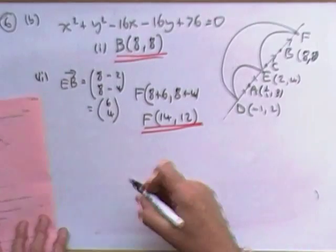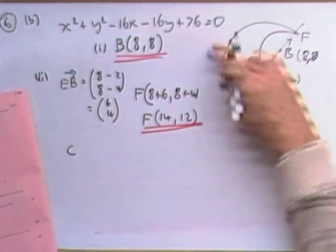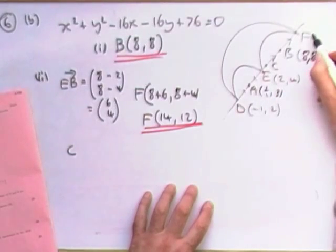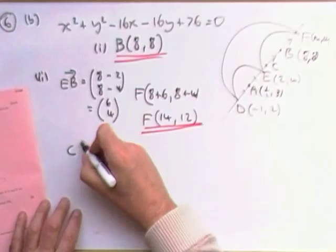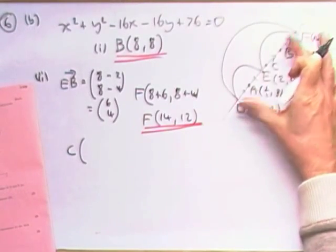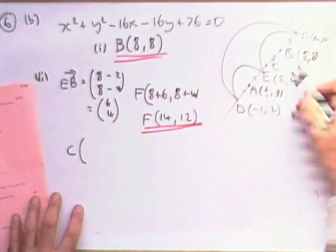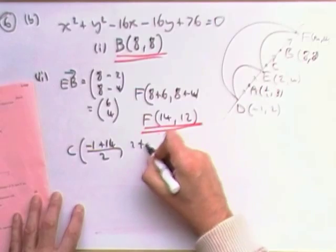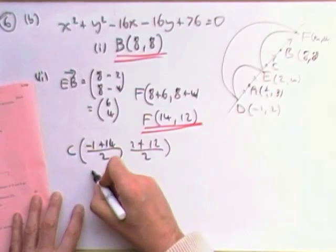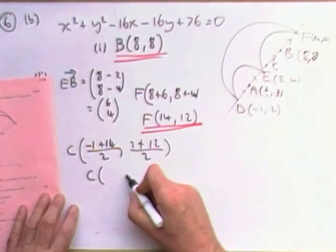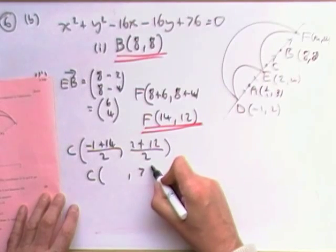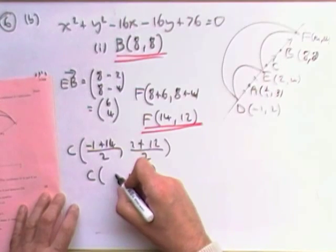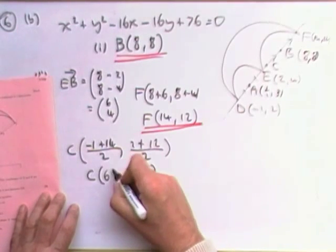What else did it want? It wanted the coordinates of C. Now C was the center of the big circle. Well, now I know the points it goes through. It goes through D and F. F was 14, 12. So C is going to be the midpoint of DF. So it's average of the coordinates. So negative one plus 14, that's a bit awkward. And two plus 12, that's a bit nicer. So C is going to be the point then. We'll do the easier one first. That's 14. So that's going to be seven. That's 13 upon two. Will I write 13 upon two? Will I write six and a half? I'm not sure which I'll put down. I'll put six and a half.